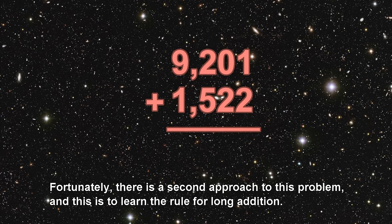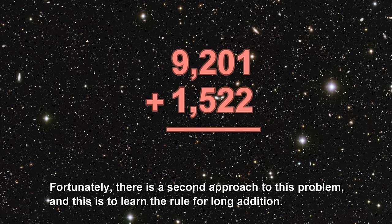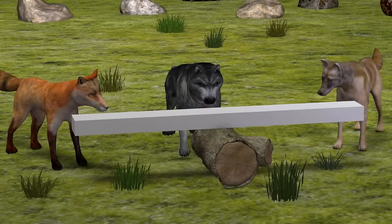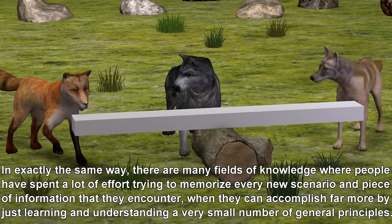Fortunately, there is a second approach to this problem, and this is to learn the rule for long addition. Once we learn this fundamental rule, then we will always be able to add any two numbers together, even if we have never seen them before.